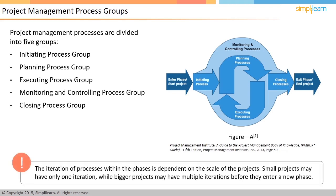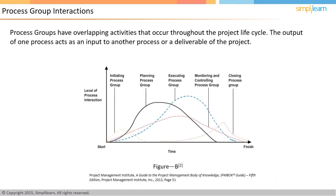Note that the iteration of processes within the phases is dependent on the scale of the projects. Small projects may have only one iteration, whereas bigger projects may have multiple iterations before they enter a new phase. Project management processes are overlapping activities. Process groups have overlapping activities that occur throughout the project life cycle, and the output of one process group is generally the input to another, or a deliverable of the project.